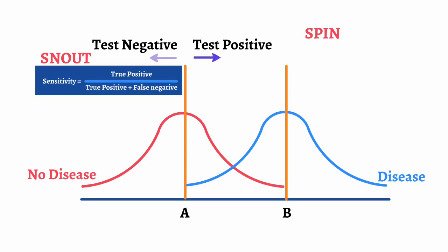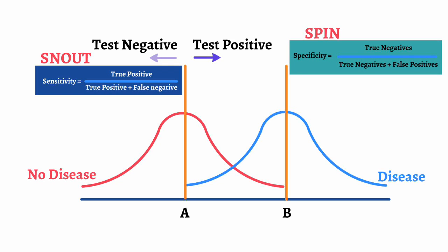Remember the mnemonic SPIN: specific tests, if positive, rule in disease. You can calculate specificity by true negatives divided by the sum of true negatives plus false positives. Another way to say this is that specificity equals true negatives divided by the number of people who do not have the disease.